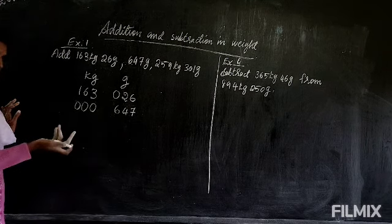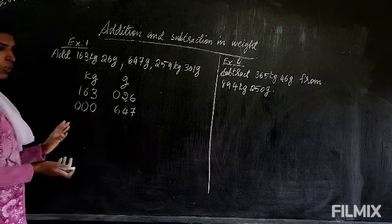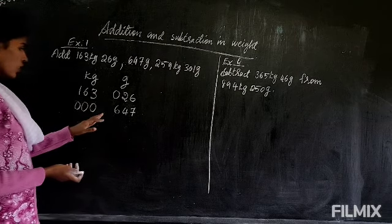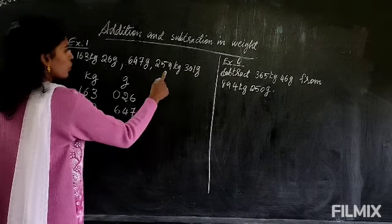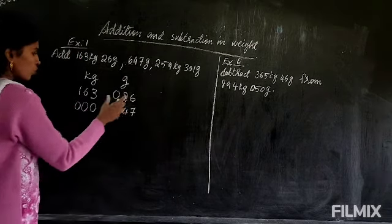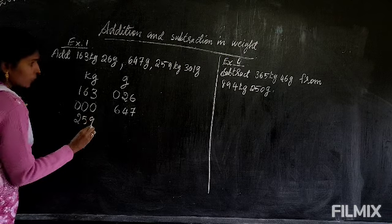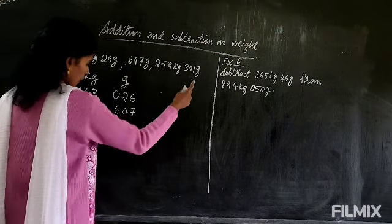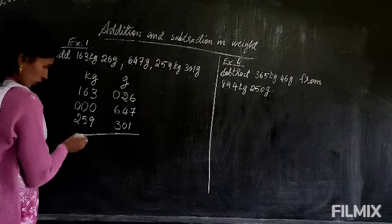Here one zero you can write, or three zeros. If you put three zeros, you won't make a mistake in the calculation. There is no kilogram, so I am putting zero. Next one is 259 kilogram. So 259 you will arrange in the kilogram place. 259, and 301 gram. This is also three digits, so you can arrange it like this.